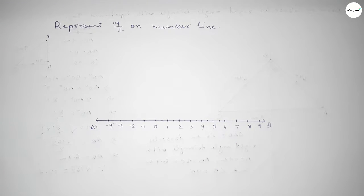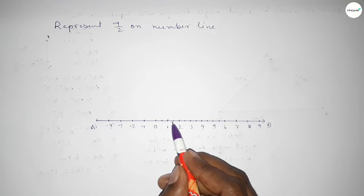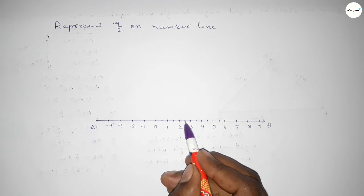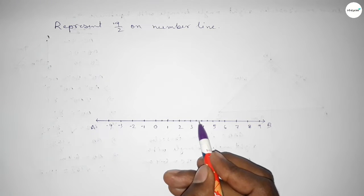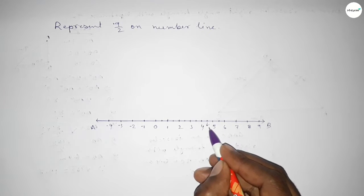And this is 1 by 2, 2 by 2, 3 by 2, 4 by 2, 5 by 2, 6 by 2, 7 by 2, 8 by 2, and this is 9 by 2. So this is the 9 by 2 on number line.